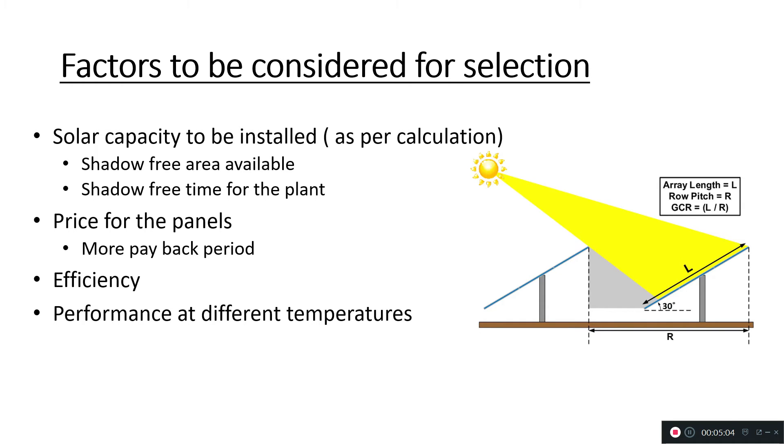Suppose you are installing for your residential area. Because of external factors, there is shadow casting on the panels which will affect your performance. In such situations, also consider half-cut cell panels.